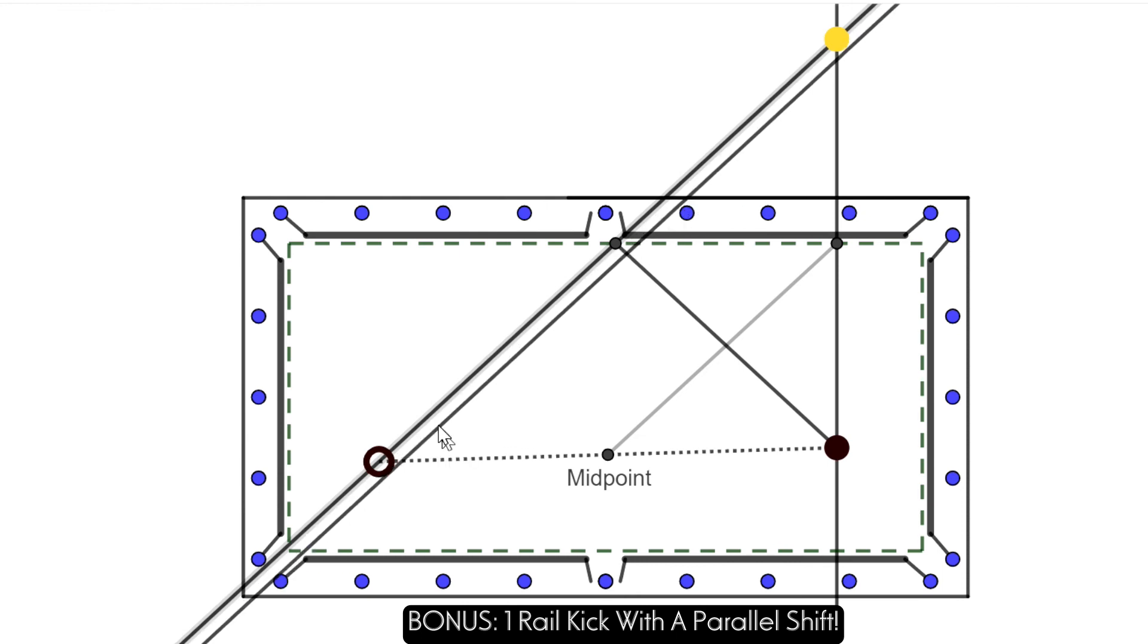All right, so once you've established your line, the correct line of aim for an angle, you can't parallel shift off of that line of aim.